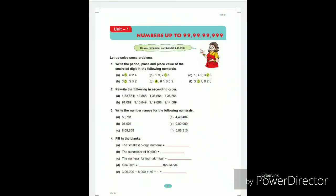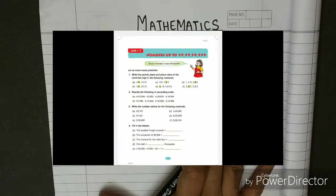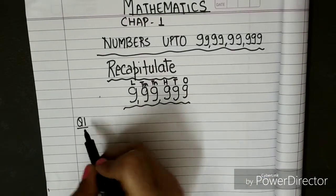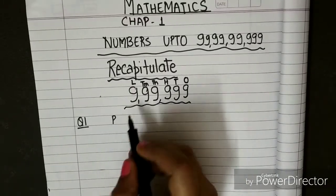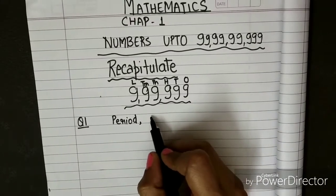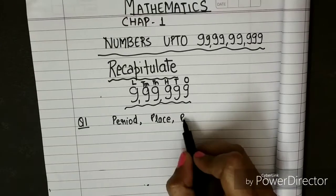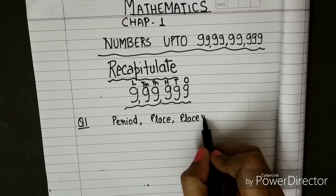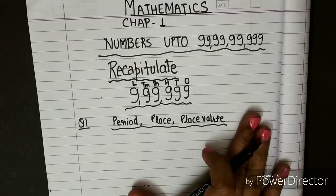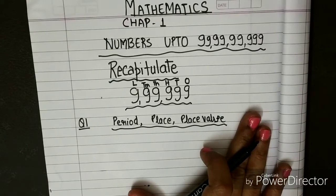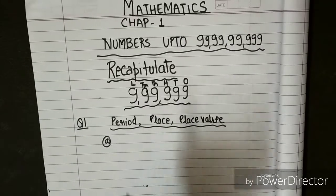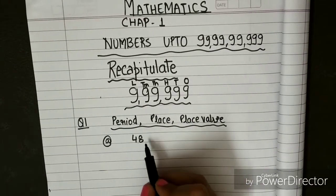This is the exercise you have to do today. I am going to revise the concept for you. Question number 1 in the revisionary sheet asks: what is a period, what is a place, and what is place value? You already know these concepts from Class 4, but I am going to revise this so there will be no confusion. I will take a number and explain it clearly.